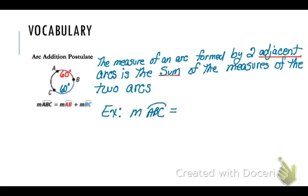So let's put some measures on there. So let's say that arc AB is 60 degrees and arc CB is 60 degrees. So to find the measure of the major arc ABC, I'm going to add 60 plus 60, and I'm going to get that the measure of arc ABC is 120 degrees.